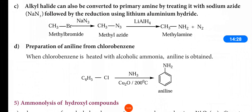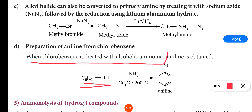Next is the preparation of aniline from chlorobenzene. When chlorobenzene is heated with alcoholic ammonia, it will form aniline, that is benzeneamine.